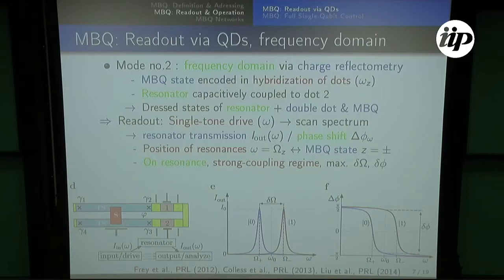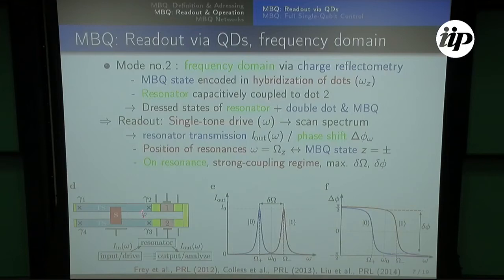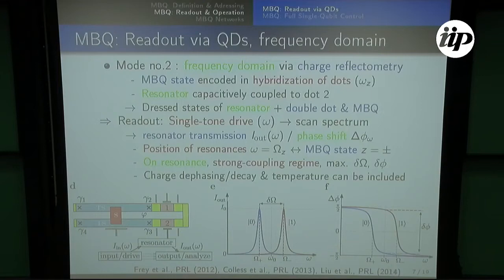You can read it out by looking at the spectrum of the resonator — either in the transmission or in the phase shift between a signal going through the resonator and the output — and you can identify these two qubit states by the position of the resonator peak. It's important to say that one can operate the system on resonance; it doesn't hurt the box qubit state, because any external charges and other things would only couple to the charges on the dots and can never obtain any other information but the Z eigenstate you want to measure.